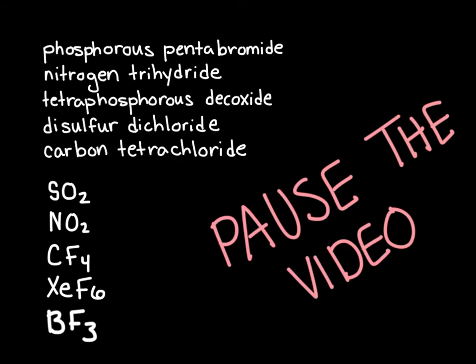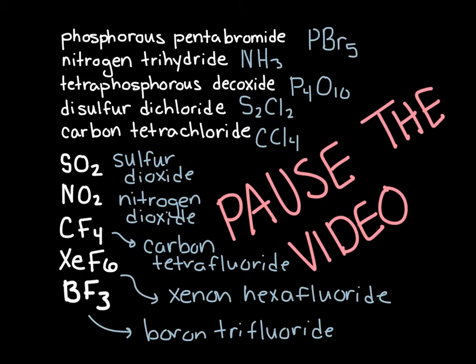Now that you know how to name and write compound formulas for type 3 binary compounds, pause the video and check if you can do these on your own, then unpause to check your answers. Phosphorus pentabromide is PBr5. Nitrogen trihydride is NH3. Tetraphosphorus decoxide is P4O10. Disulfur dichloride is S2Cl2. Carbon tetrachloride is CCl4. SO2 is sulfur dioxide. NO2 is nitrogen dioxide. CF4 is carbon tetrafluoride. XeF6 is xenon hexafluoride. And finally, BF3 is boron trifluoride.